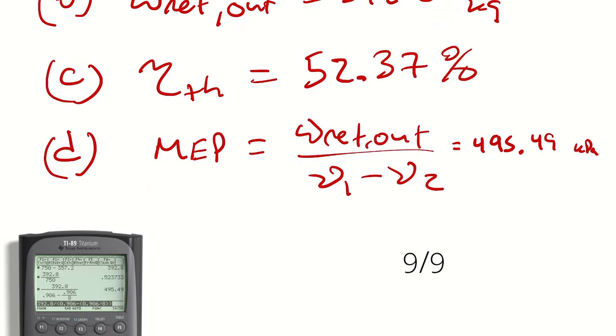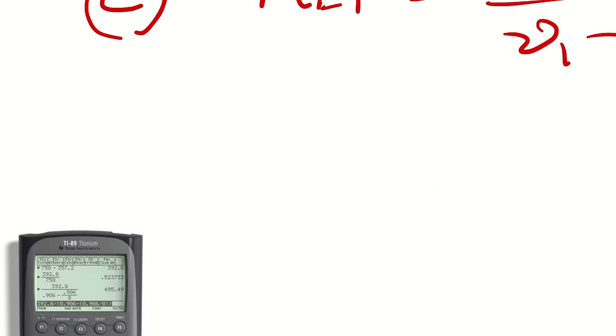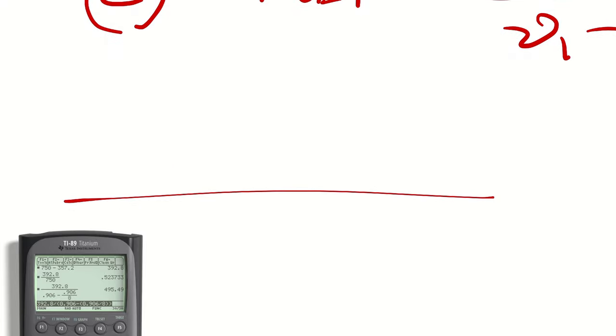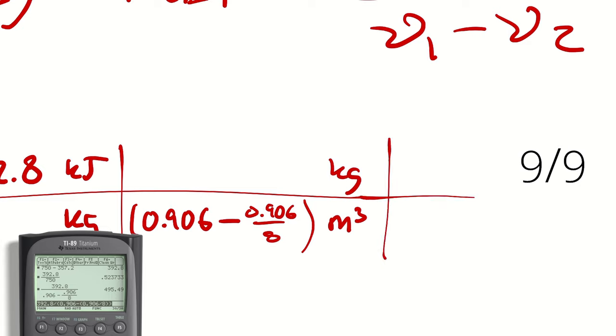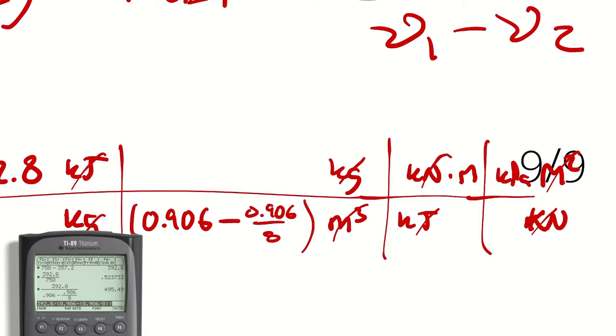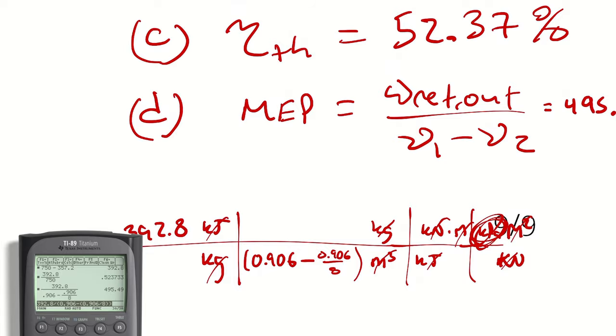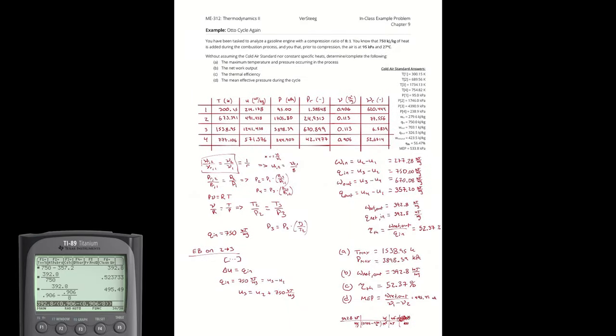It occurs to me that I never walked you through that unit, how I know it's kilopascals. So let's do that now. 392.8 kilojoules per kilogram, and I'm dividing by 0.906 minus 0.906 divided by 8 in cubic meters per kilogram. When I take a kilojoule and write that as a kilonewton times a meter, and write a kilopascal as being a kilonewton per square meter, kilonewtons cancels kilonewtons, cubic meters cancels meters squared and meters divide with kilopascals. So when I take a quantity in kilojoules per kilogram and divide by cubic meters per kilogram, the result is in kilopascals. And with that we have completed our second Otto cycle.